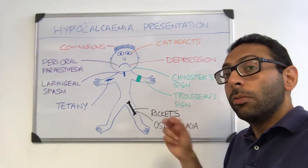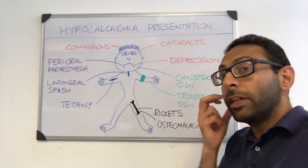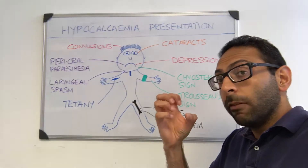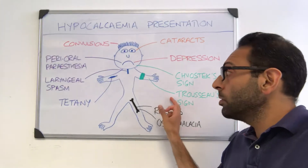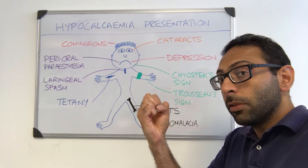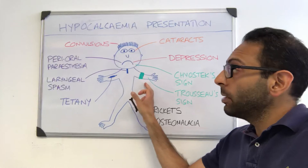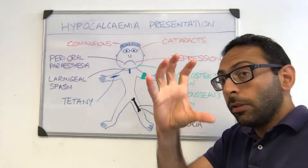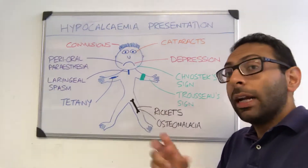You've got Chvostek's sign, which is when you tap over the parotid area or the facial nerve area and you get twitching of the facial muscles. And then you have Trousseau's sign, which is when you get carpal spasm — the fingers or the wrists go into spasm, particularly when you put on a blood pressure cuff and inflate it. You get that classic Trousseau sign.